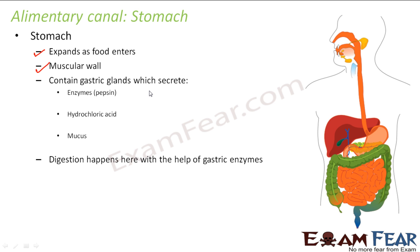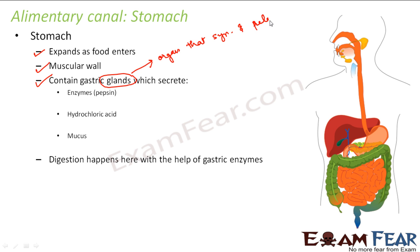The stomach is a place where digestion actually happens. For digestion we need enzymes, so the stomach has enzymes. The muscular walls help in mixing the food with the digestive juices. Glands are organs that synthesize and release substances like hormones and enzymes. We have several glands in our body — for example, endocrine glands and exocrine glands.